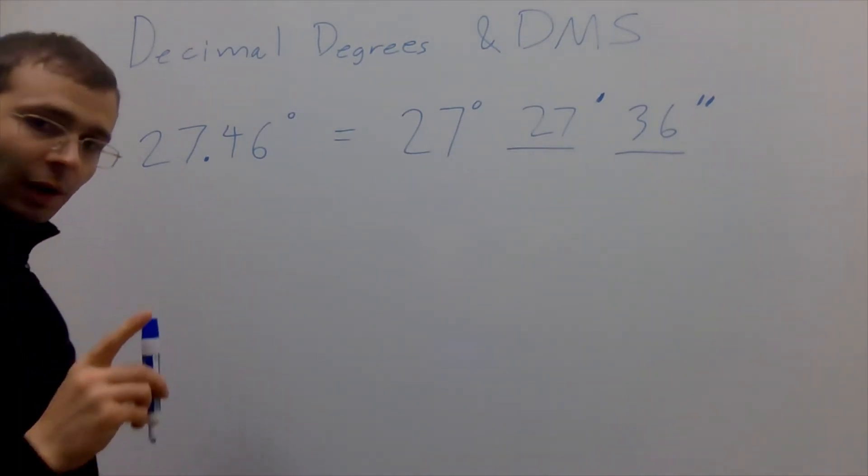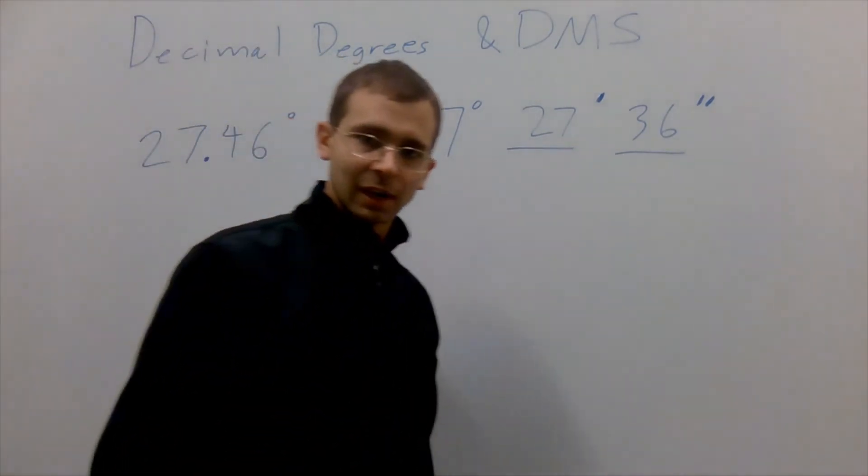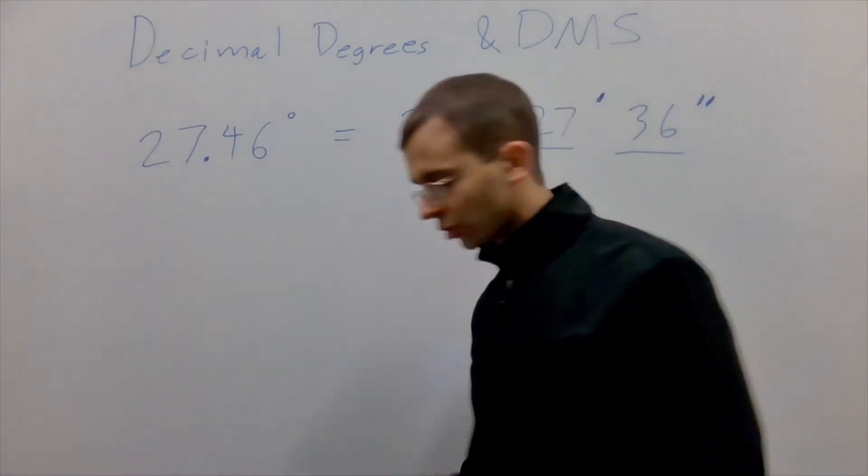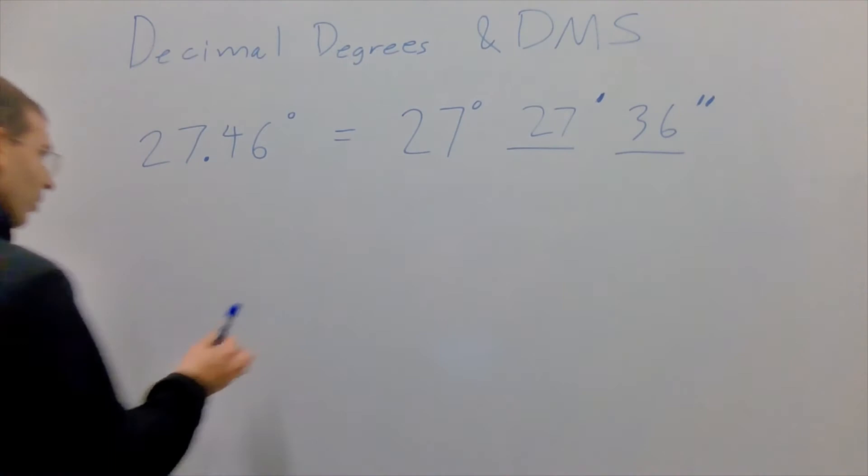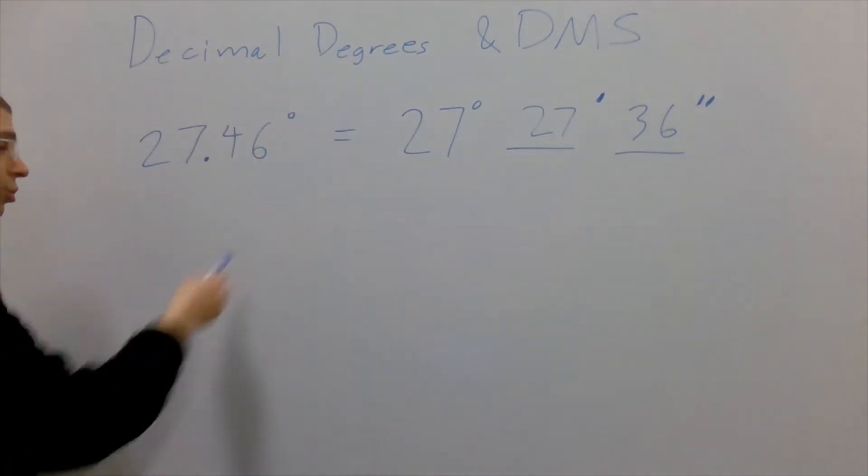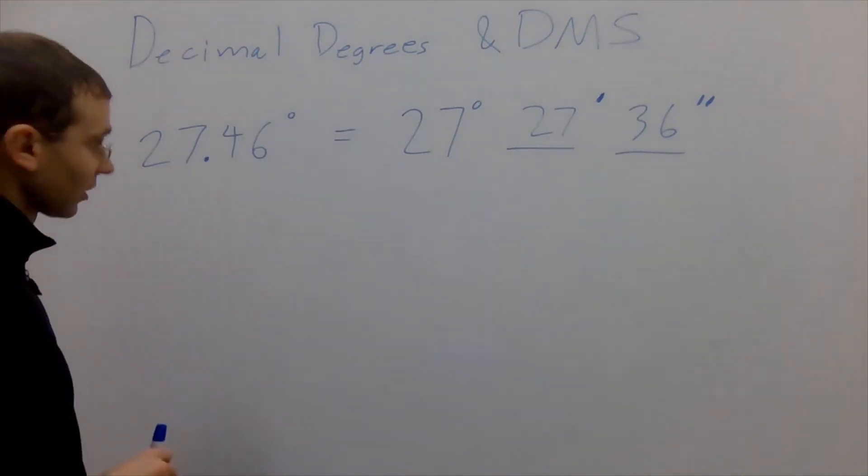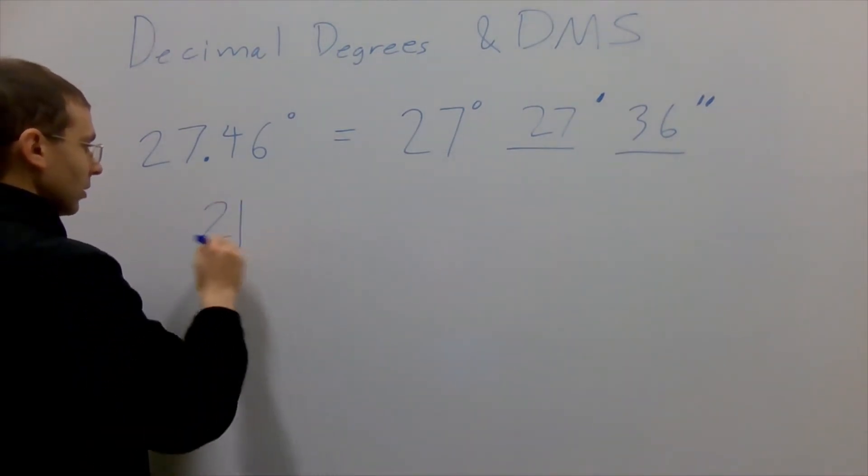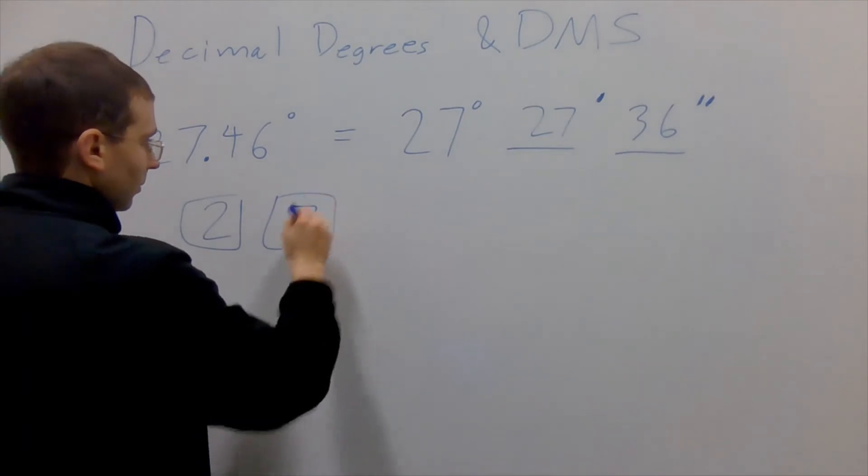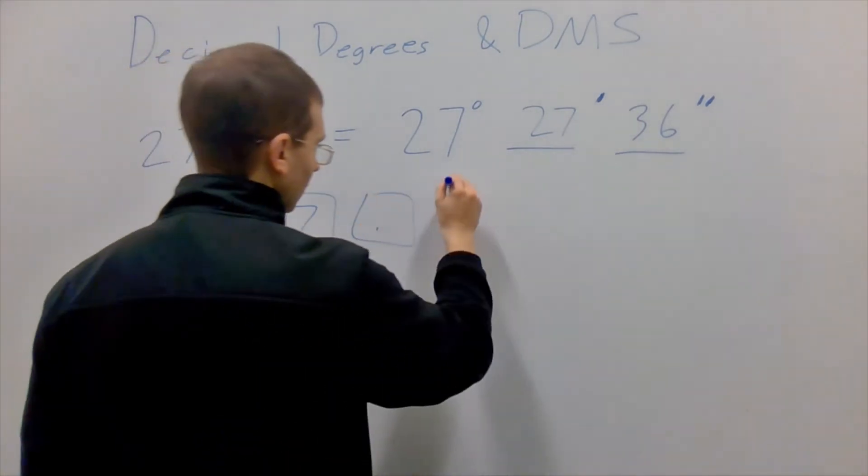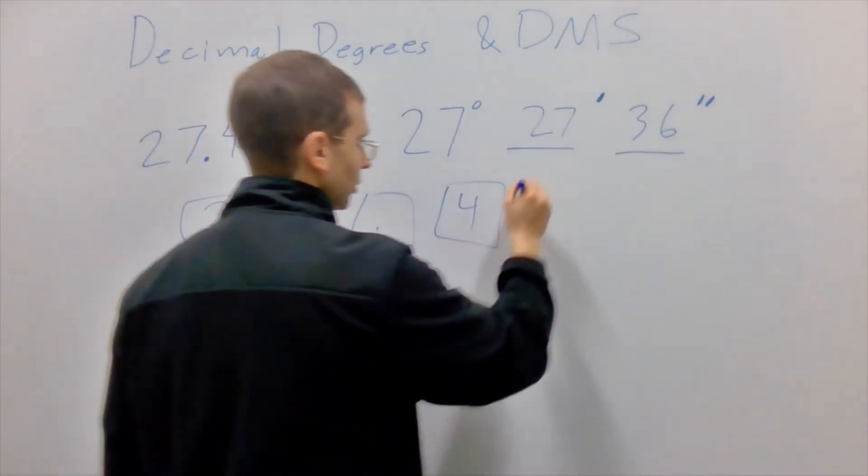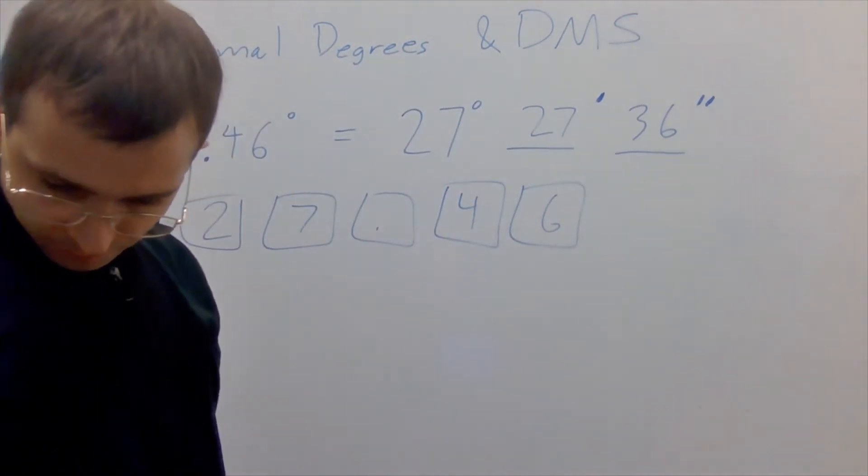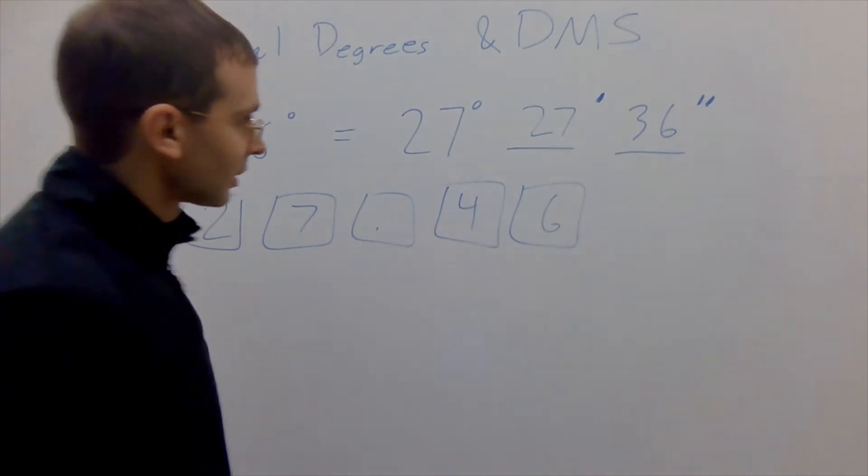Many calculators such as our TI-30XA here can do this conversion for us very smoothly, but you have to make sure you put it in the proper syntax. The calculator can only understand things in a certain way. Going from decimal degrees to degrees minutes seconds is fairly straightforward - you simply type in 27.46 and then...